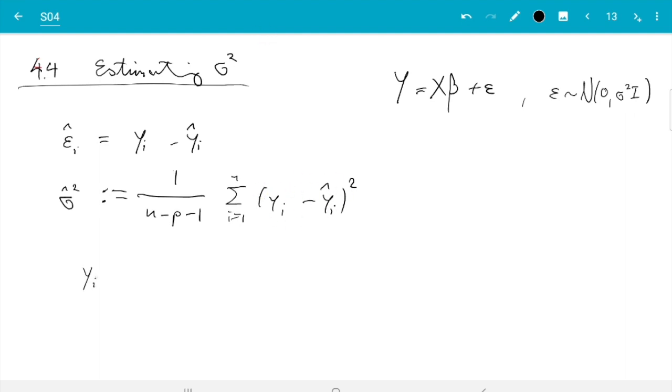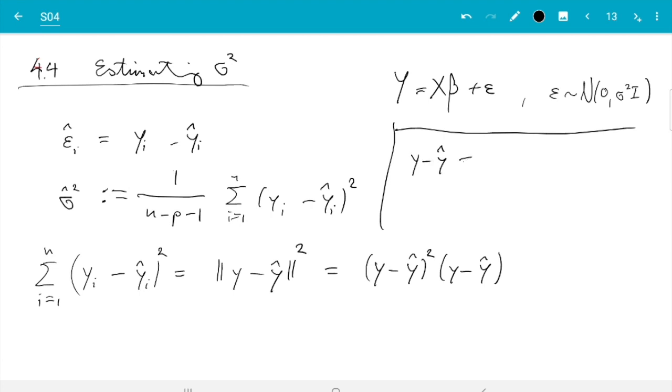So I start here. yi minus yi hat squared and that summed up. We need to worry about the prefactor in a second. That is the Euclidean length of y minus y hat squared. And that's y minus y hat transpose y minus y hat. So that's just new notation. Then y minus y hat is y minus h y. The hat matrix turns y into y hat. That is identity minus hat matrix applied to y.